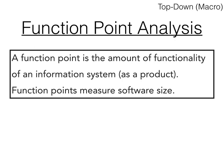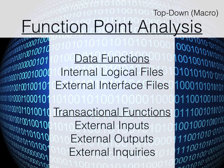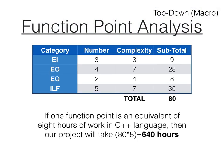A function point is the amount of functionality of an information system, or the functions that have to be performed by a particular piece of software. Function points are a measure of software size. Function point analysis looks at the number of functions contained within an information system — the number of things that must be programmed into the software. When conducting a function point analysis, we add up the total number of functions across categories: external inputs, external outputs, external inquiries, and internal logic files. We then multiply the count by their complexity to give us a total number of function points.